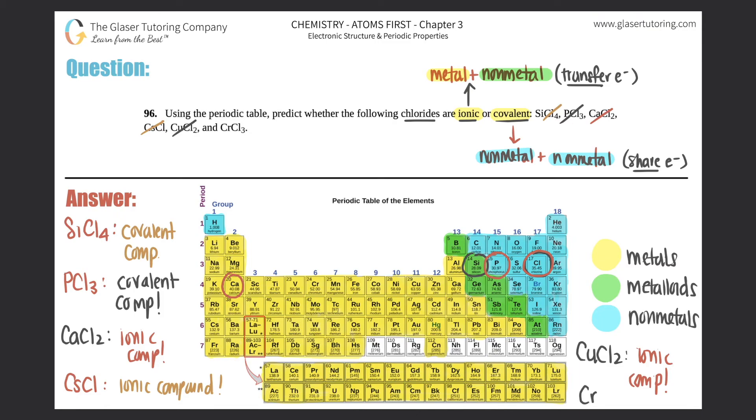Get rid of that one. Last but not least, CrCl3. Cr is chromium. Where's chromium? Sounds like a metal, but let's just be sure. Chromium is over here. Number 24. It's in yellow. It's a metal. So it would be an ionic compound. When this compound forms, it would be ionic. Transfer of electrons would happen here. And that's this one.